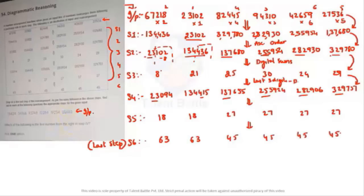So that is the logic: last three digits minus the digital sum gives step four values. Now from step four to step five, again we have two-digit numbers — 18, 18, 27, 27, 27. What is the logic? Again check the digital sum: 2+3=5, 5+9=14, 14+4=18 — and continuing you get 27 and so on. So this is also a digital sum.